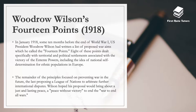Ten months before the end of the First World War, the US president had written a list of proposed war aims called the 14 Points. Eight of these points dealt specifically with territorial and political settlements, including the idea of national self-determination for ethnic populations in Europe. The remainder focused on preventing future war, with the last point proposing the League of Nations — a body to arbitrate international disputes. Wilson hoped this plan would bring about a just and lasting peace, ending the war to end all wars. These 14 Points really influenced the treaties signed thereafter.